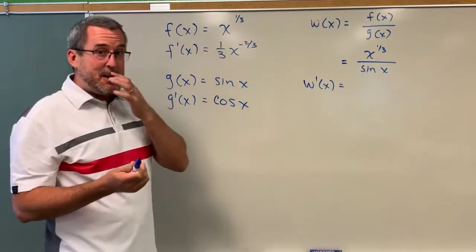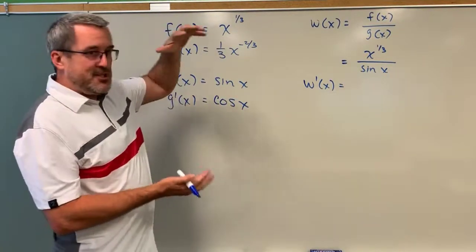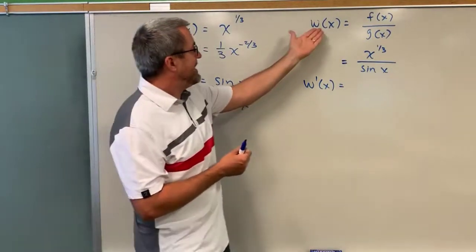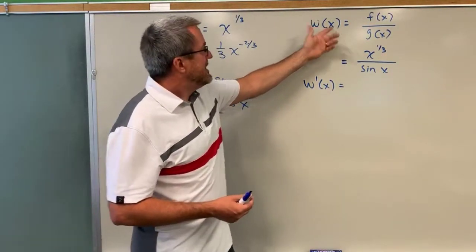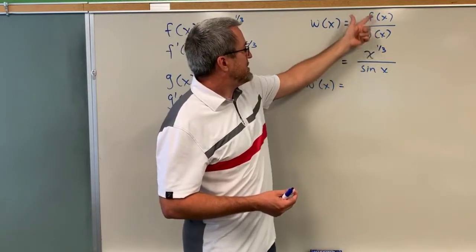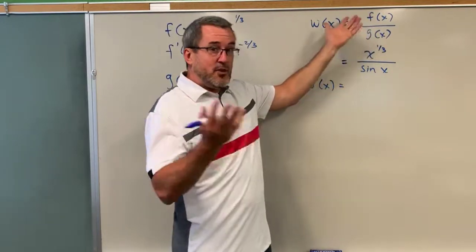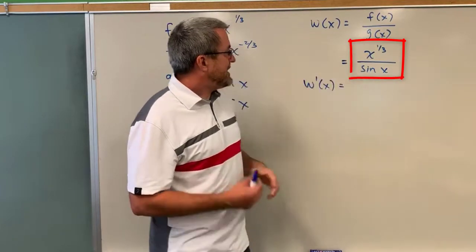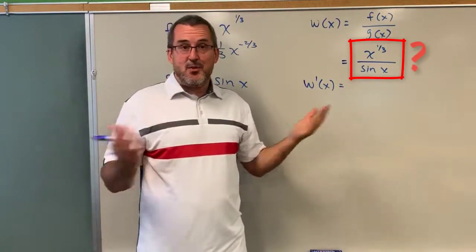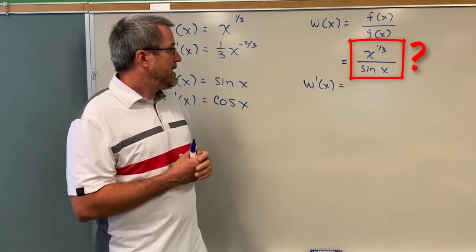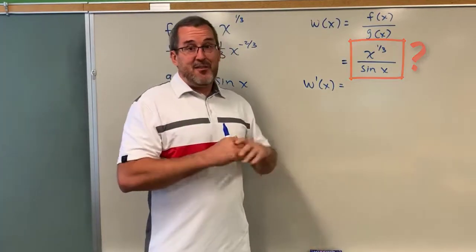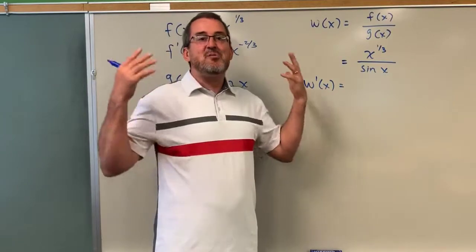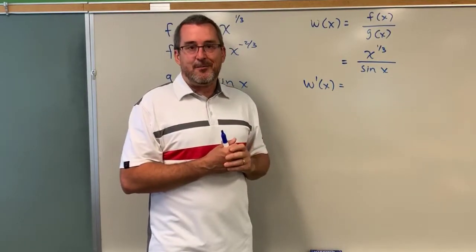The question at hand today is: what if we were considering a rational function, or a quotient of two functions? I'm going to call it w of x, which is the quotient of two functions. For example, f of x is x to the one-third, and g of x is sine of x. How would we take the derivative of that quotient? I would ask you to pause the video now, if you've never thought of this before, and just make a conjecture — how do you think the derivative might play out?